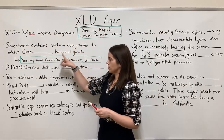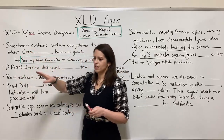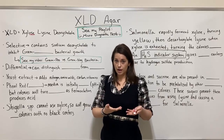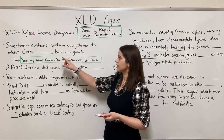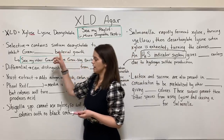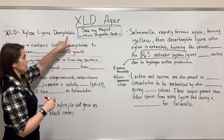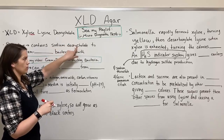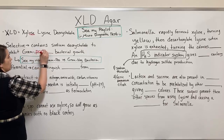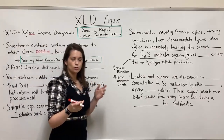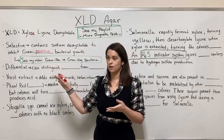XLD Agar is both selective and differential. Selective means that it allows for the growth of some types of organisms while inhibiting the growth of others. XLD Agar is selective because it contains a bile salt — sodium deoxycholate, which is also where part of the name comes from — and that inhibits gram-positive bacterial growth. So gram-negative bacteria will be able to grow, while gram-positive bacteria will be inhibited.